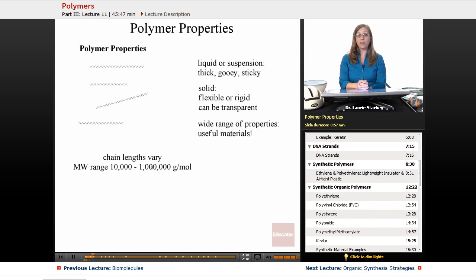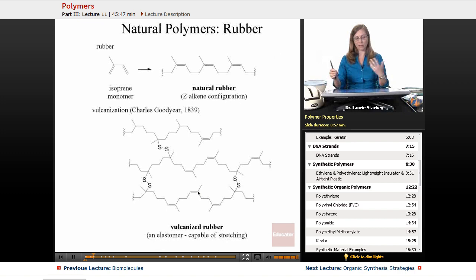And what we find is a very, very wide range of properties. So, we end up with very useful materials. And again, the chain lengths will vary of a given polymer. There'll be a varying length, but our molecular weights can range anywhere from like 10,000 to a million grams per mole. So, these are just huge, huge molecules, extremely long carbon chains, not necessarily carbon chains.